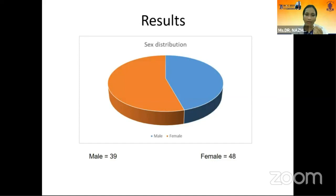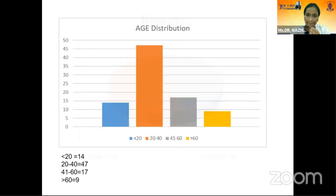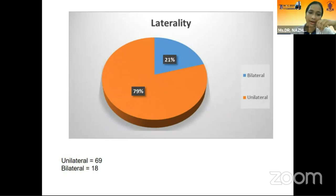In our study, more female cases were found — 48 cases — compared to 39 males. Age distribution showed the highest number in the 20 to 40 years age group, with fewer cases in patients above 60 years. Unilateral cases were more common at 69, with 18 bilateral cases.